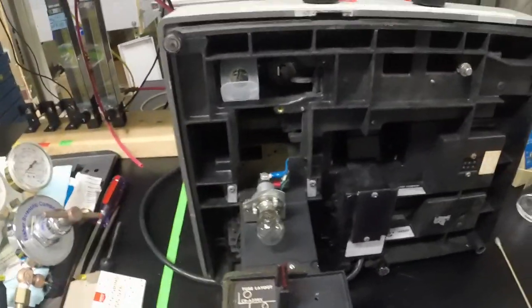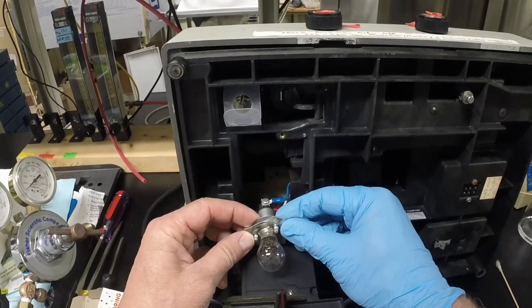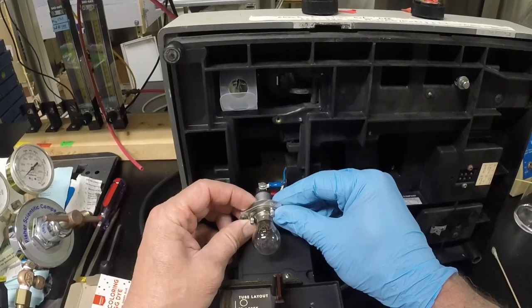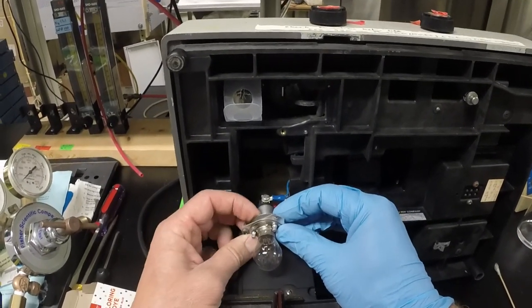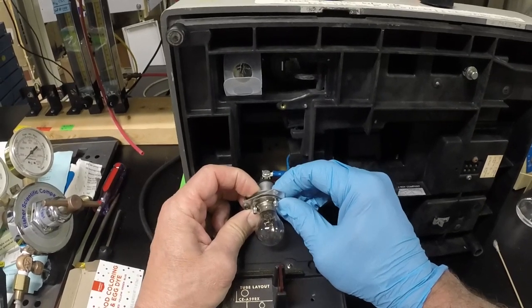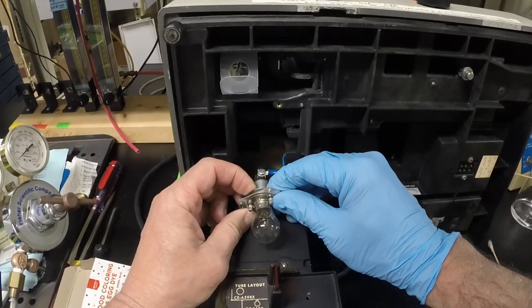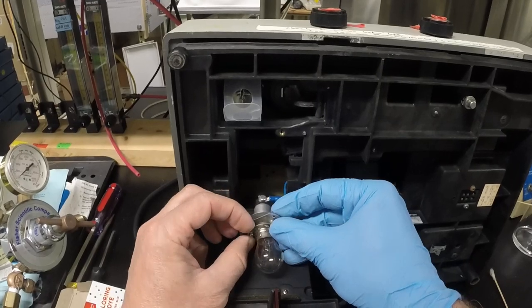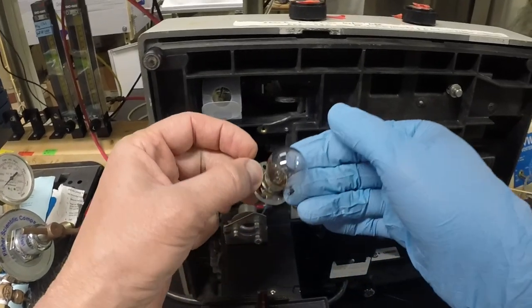To actually take the bulb out, it's going to be warm, but the reality is you don't even have to touch it. It's spring-loaded. So you push on that spring-load and rotate it, and the bulb will come out. Just like that.